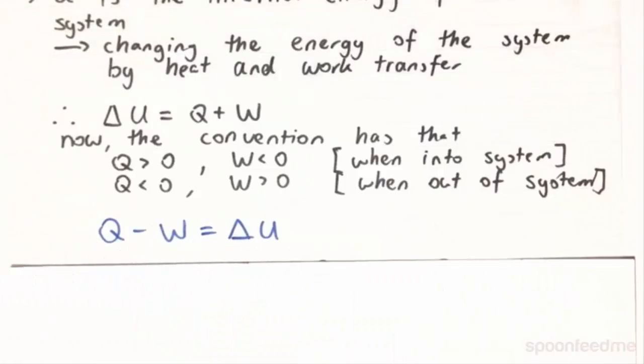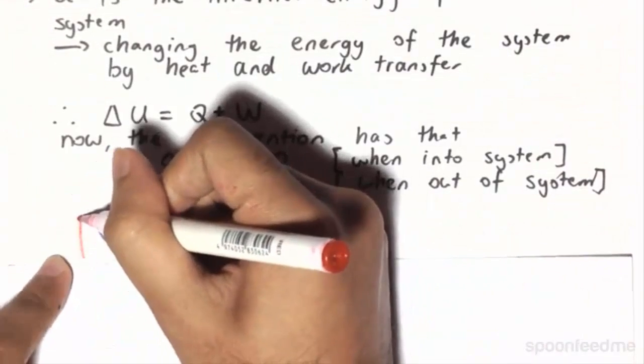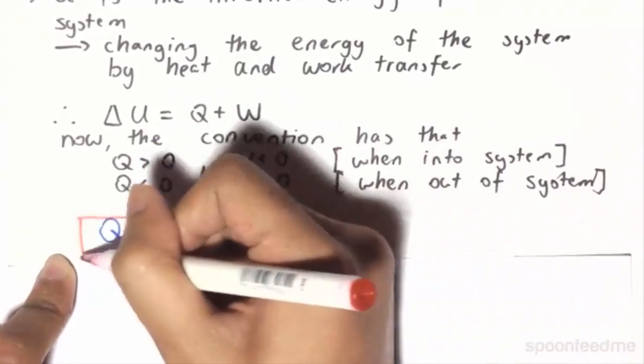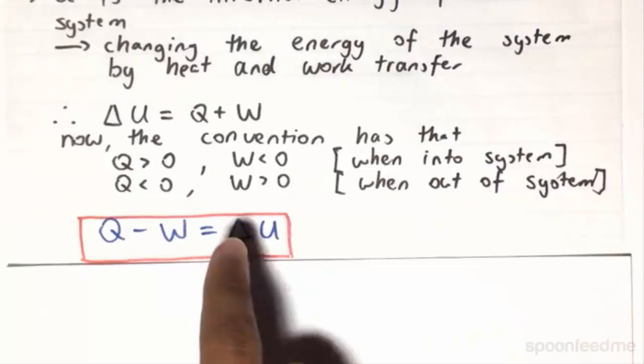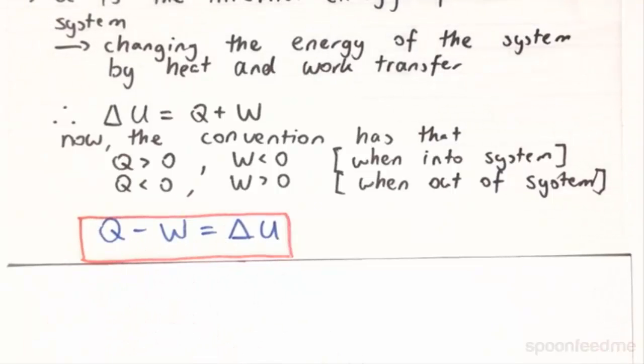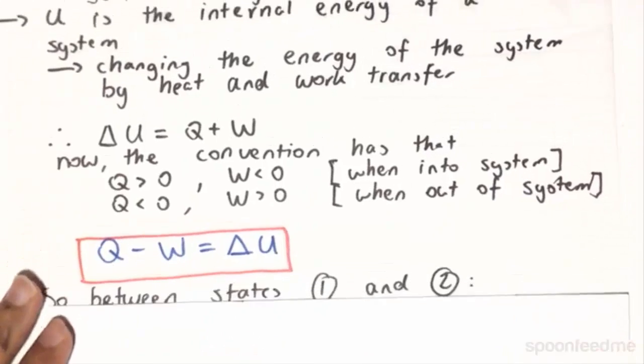So therefore, this is going to be our first law for closed systems. Remember it well, because it will come up very often. The change in internal energy is equal to the Q transfer minus the work transfer.